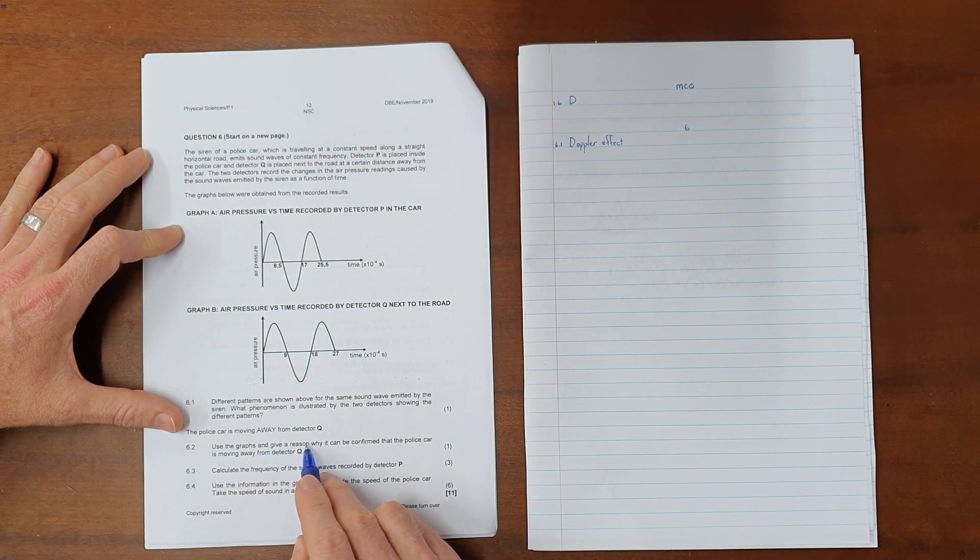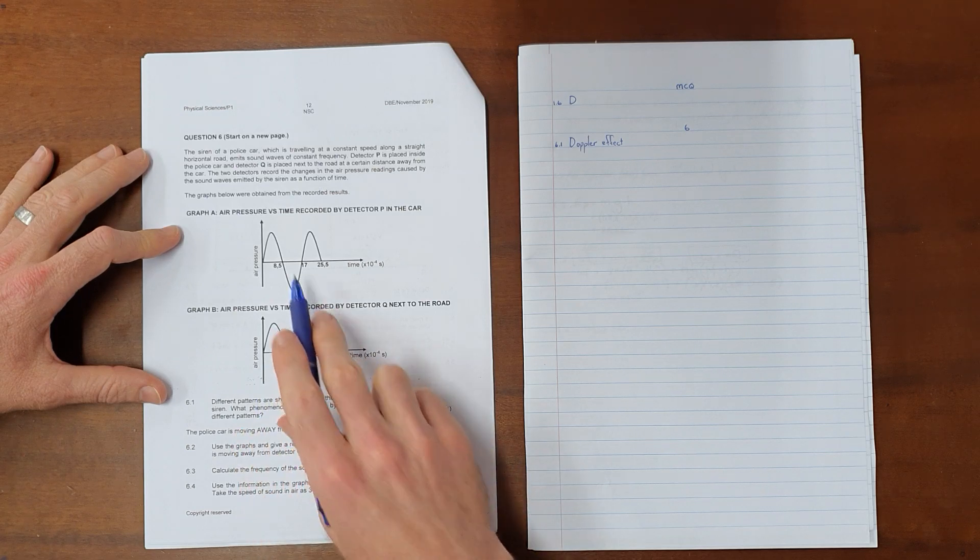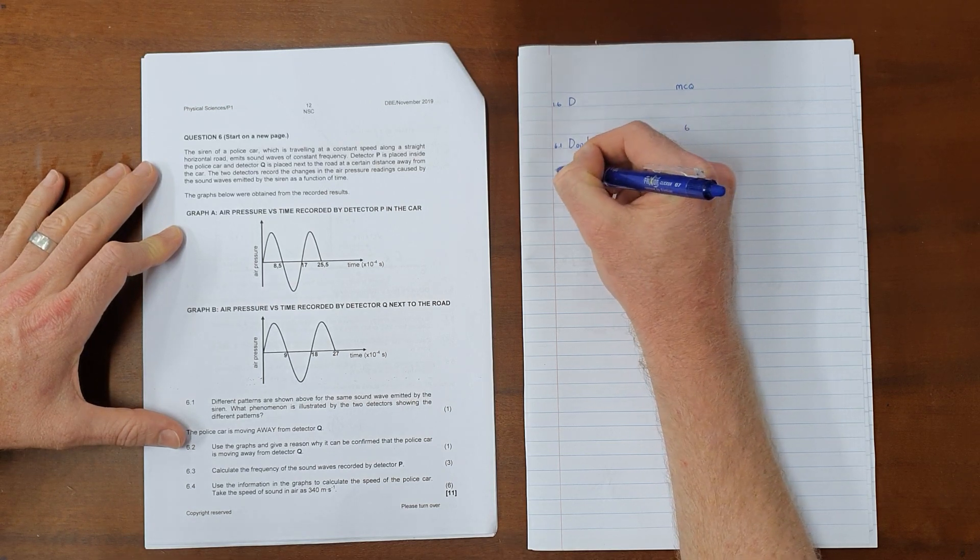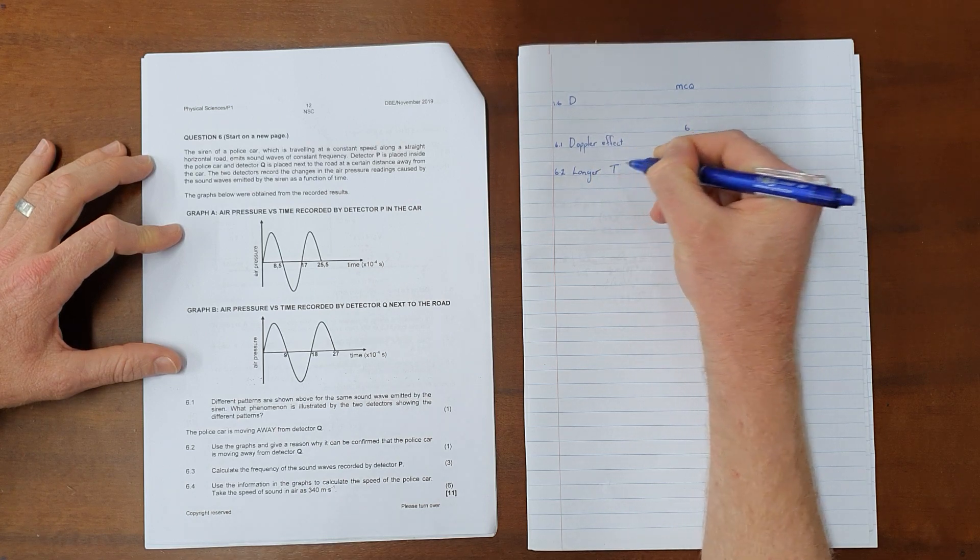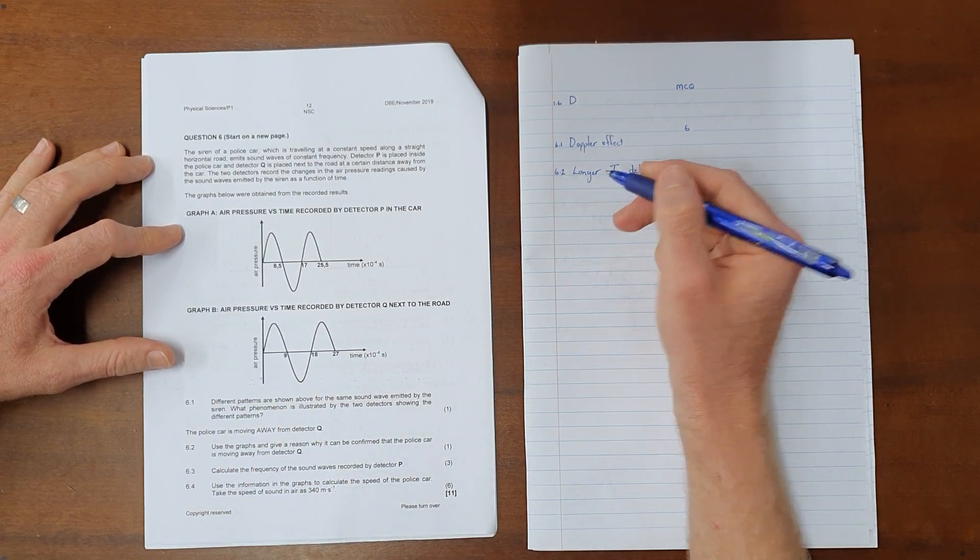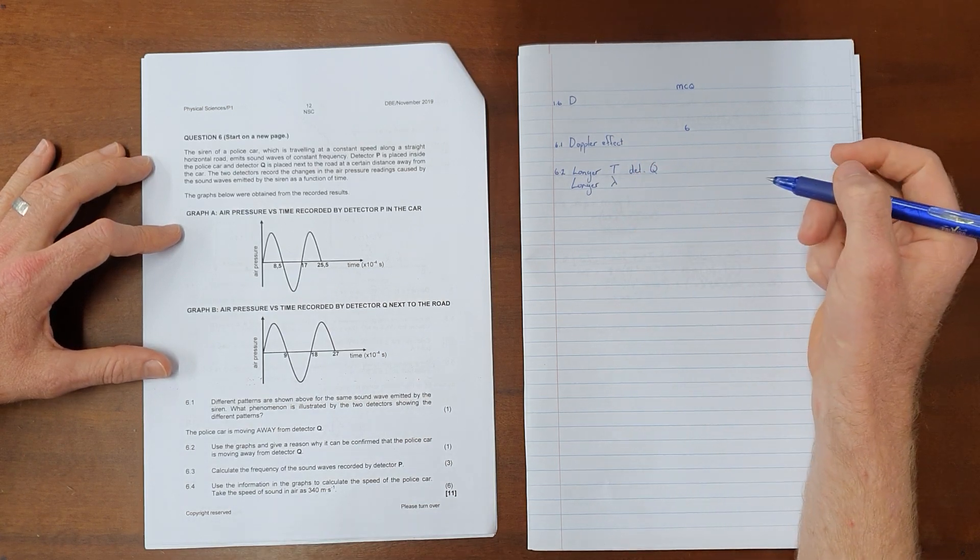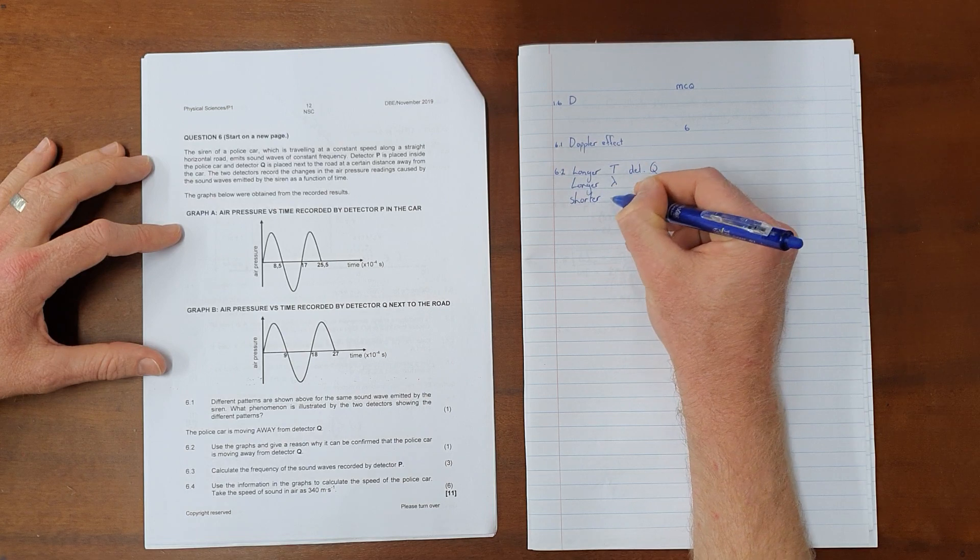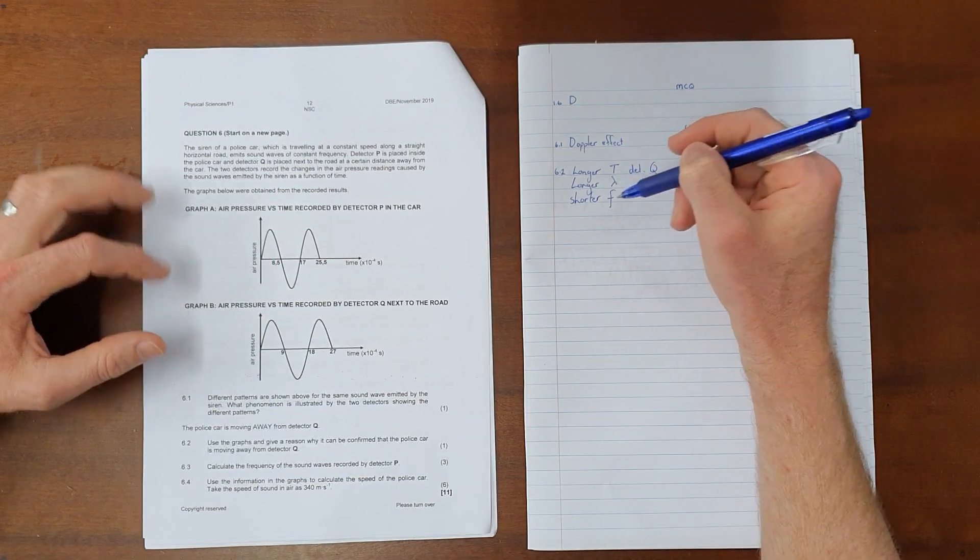Question 6.2. The police car is moving away from the detector. This makes sense to us because as we can see graph B has a frequency that is more spread out than graph A. Use the graphs and give a reason why it can be confirmed that the police car is moving away from detector Q. As we've just said, we can either say that there is a longer period detected by Q. We can also say that this longer period results in or is the result of a longer wavelength detected by Q, and it would also be acceptable to say that there is a shorter frequency. Any one of these shows that you understand that as the object moves away it is going to stretch out the period, wavelength and decrease the frequency.